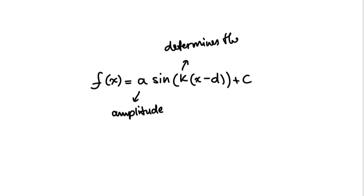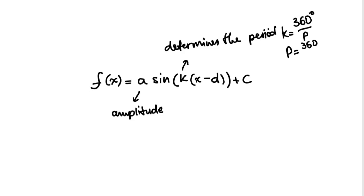In order to find k, you divide 360 by the period. And in order to find the period, you divide 360 by k, provided your functions are sine or cosine, because the standard period for sine and cosine functions is 360 degrees. If it's a tangent function, which we don't normally use for applications, the period will be 180.